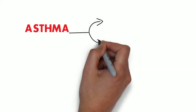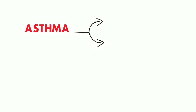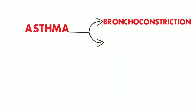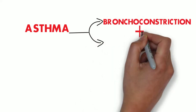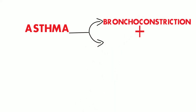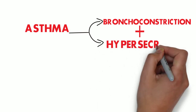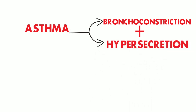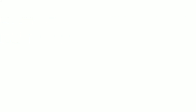Asthma is a sort of COPD which is characterized by bronchoconstriction and hypersecretion of the tracheobronchial glands due to the increased responsiveness of these glands and the smooth muscles to the external allergen.